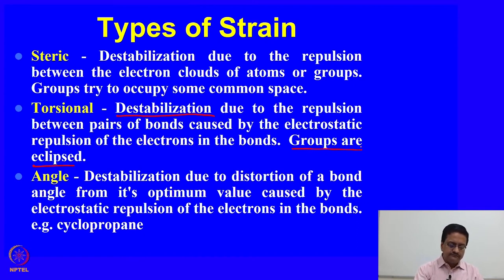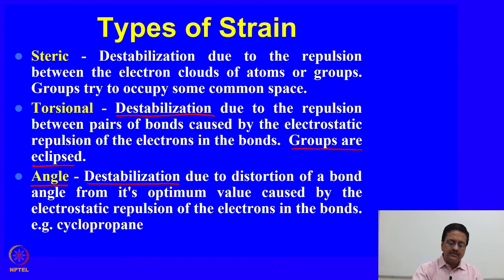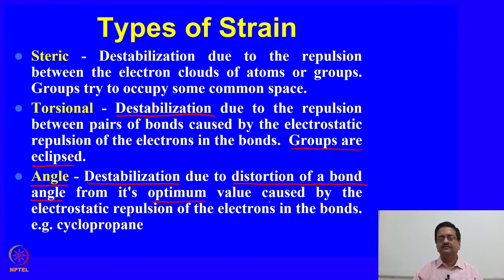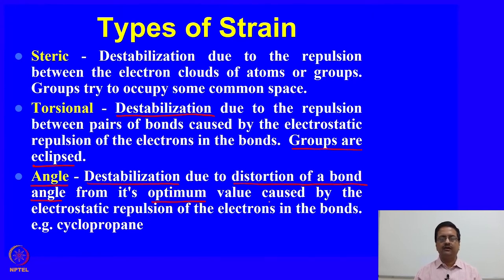The third type of strain is angle strain — destabilization due to distortion of a bond angle from its optimum value. For example, in cyclopropane or cyclobutane the carbon atoms are sp3 hybridized, so the bond angles should be 109 degrees, but in these rings the angle is distorted from that 109 degrees.